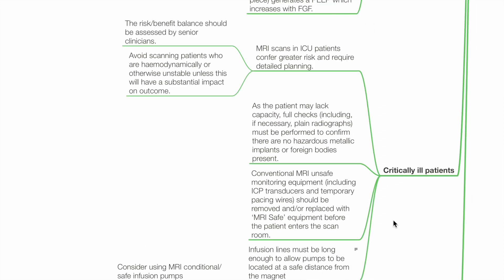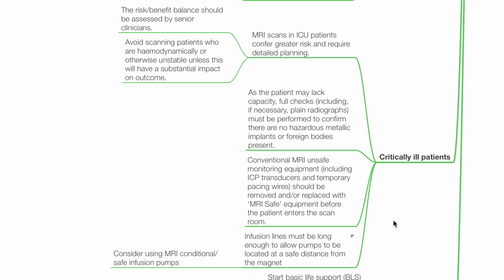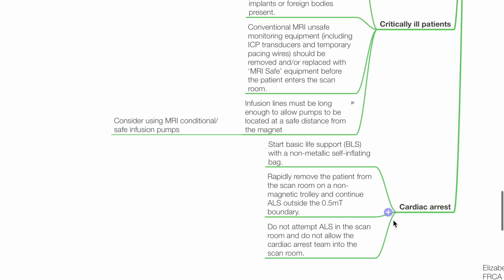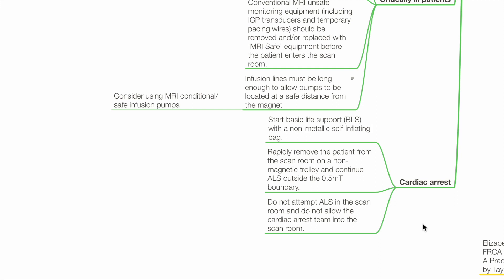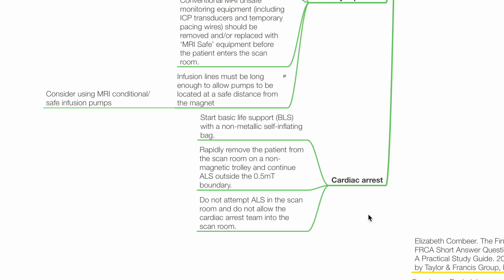Regarding critically ill patients: MRI scans in ICU patients confer greater risk and require detailed planning. The risk-benefit balance should be assessed by senior clinicians. Avoid scanning patients who are haemodynamically unstable unless there is substantial impact on outcome. As the patient may lack capacity, full checks must be performed to confirm there are no hazardous metallic implants or foreign bodies present. Conventional MRI-unsafe monitoring equipment such as ICP transducers and temporary pacing wires should be removed or replaced with MRI-safe equipment before the patient enters the scan room. Infusion lines must be long enough to allow pumps to be located at a safe distance from the magnet. Consider using MRI-conditional or MRI-safe infusion pumps.